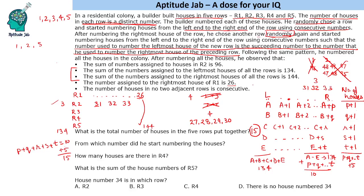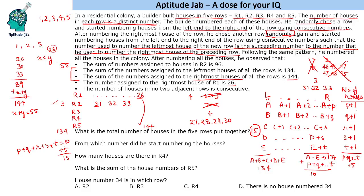The sum of rightmost house numbers is 144. We know three of them: 26, 30, and 33. Their sum is 89, so the remaining two rightmost numbers x and y (x < y) satisfy x + y = 55. Since y > x and values 28–33 are already used, the minimum for y is 34. Checking: if y = 38 (row of 5 houses starting after 33), then x = 17. If y = 35 (row of 2 houses), then x = 20. If y = 34 (row of 1 house), then x = 21.